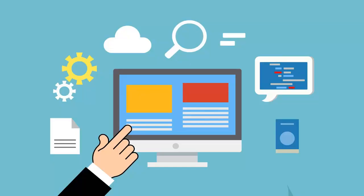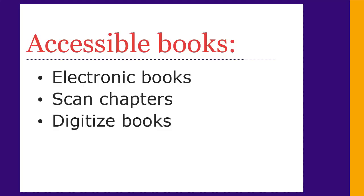If you need library books in accessible electronic formats, there are three options: finding electronic books, requesting chapter scans, and requesting whole book scans.